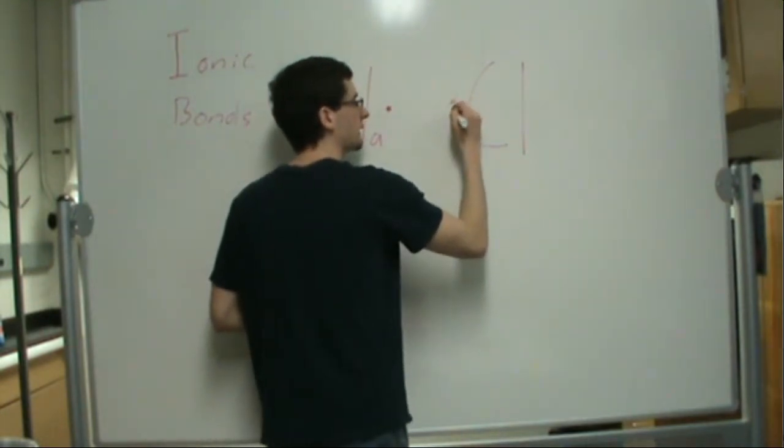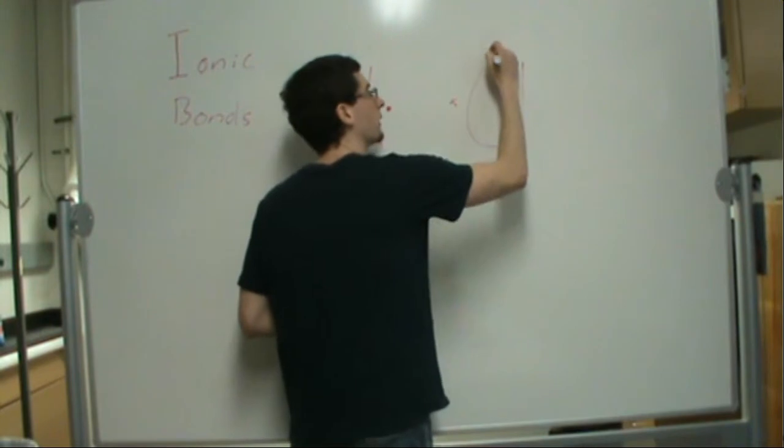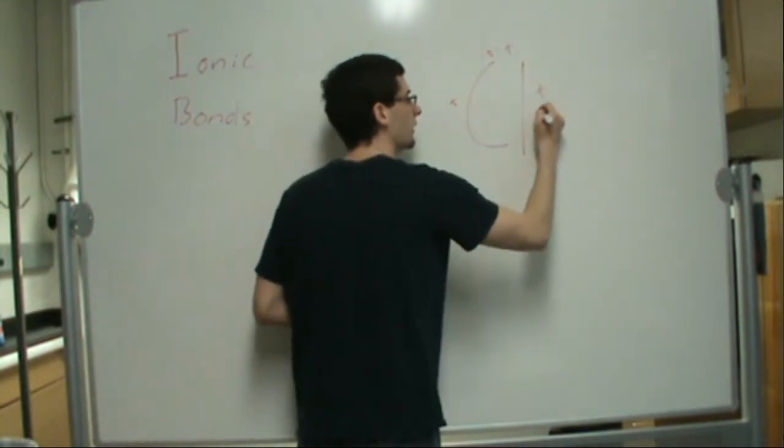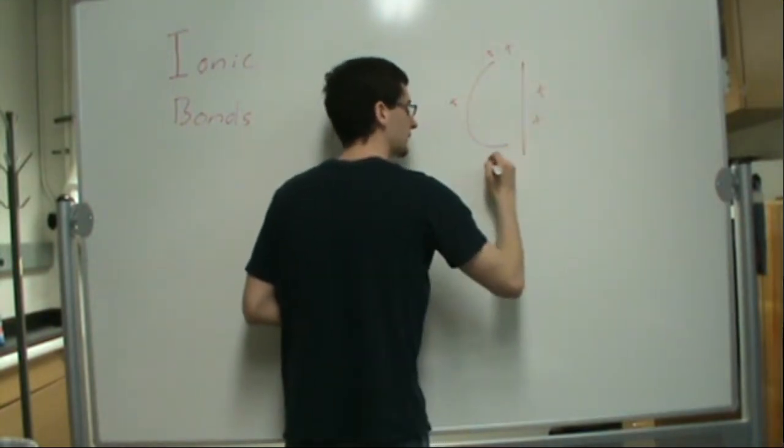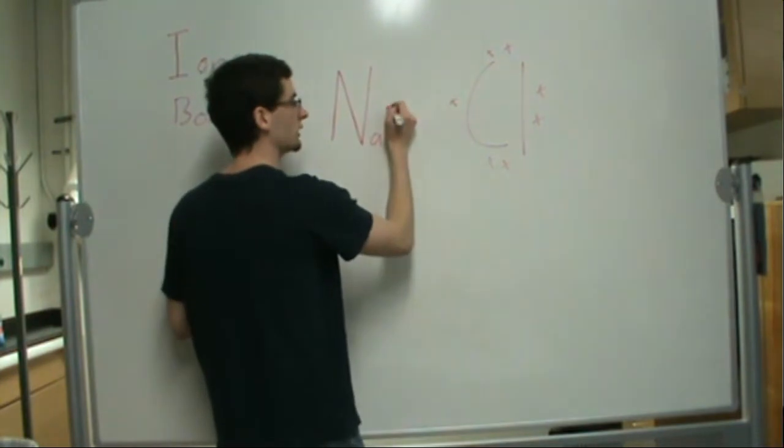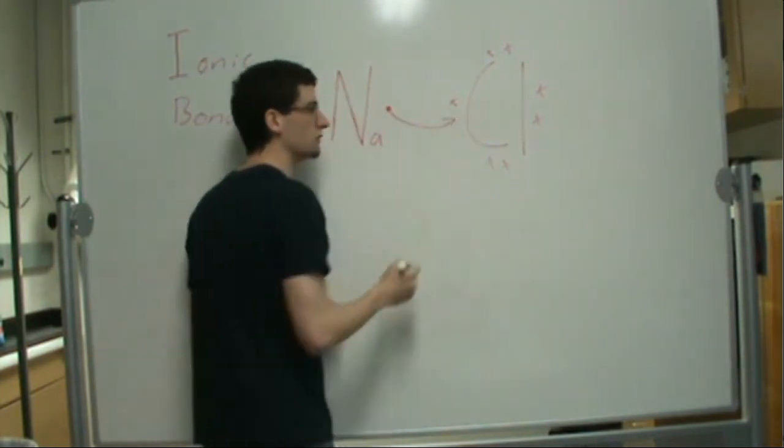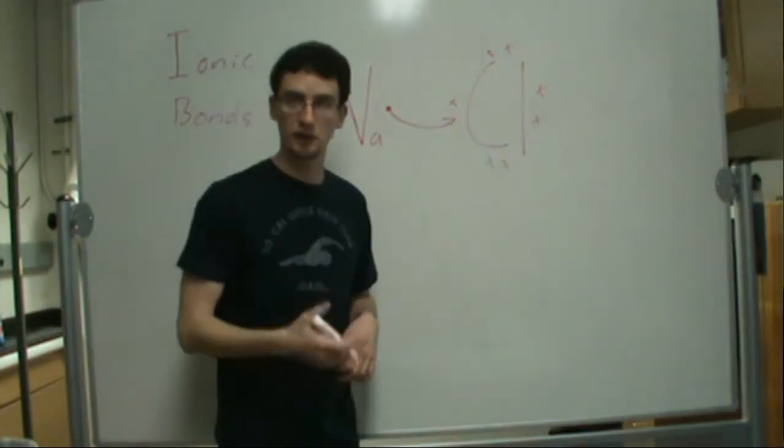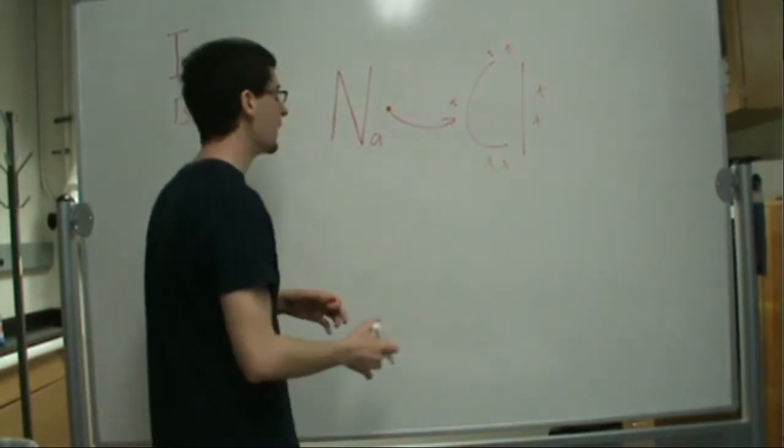what actually occurs in ionic bonds is the electrons are essentially donated completely to what they call the anion, or the negatively charged species. So what ends up happening is we get our sodium to become a cation, which is a positively charged species, and our chlorine becomes